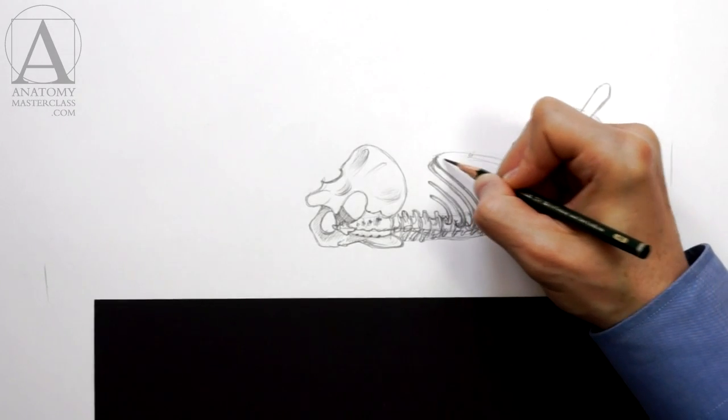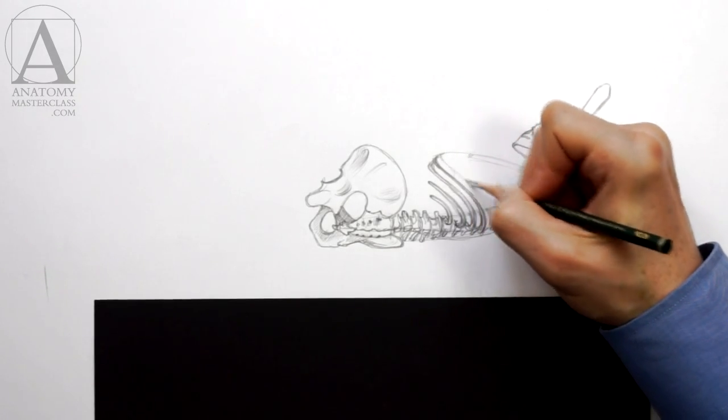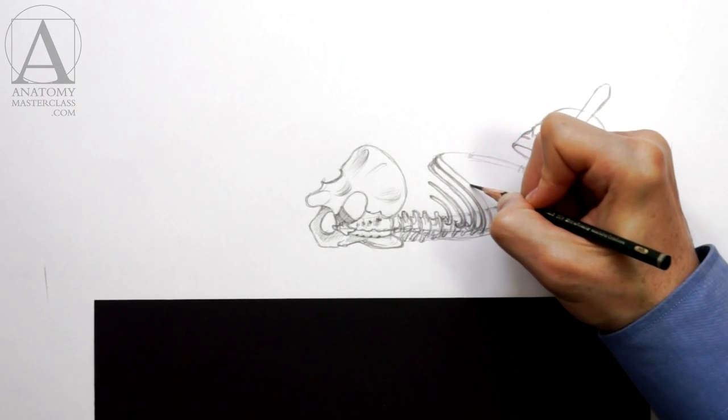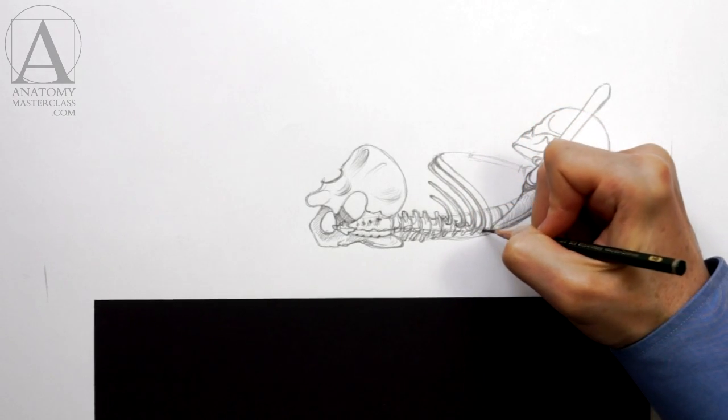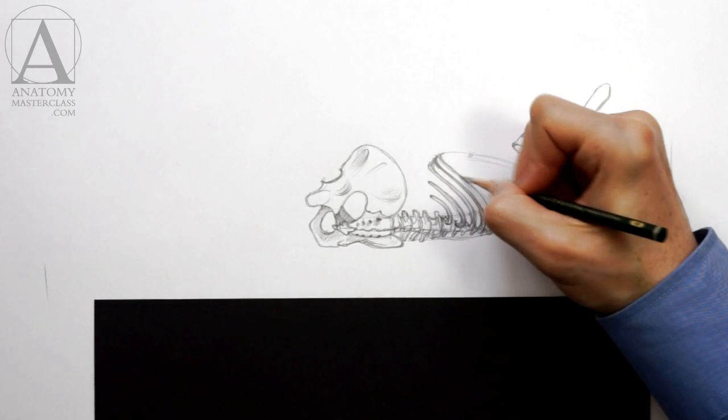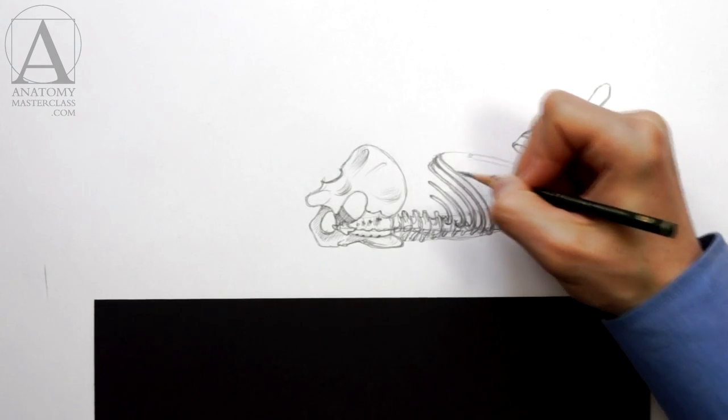The eighth, ninth, and tenth ribs are false ribs. This comes from the fact that they are not attached to the breastbone directly, but instead, in the front, they are connected to the costal cartilage of the previous rib.